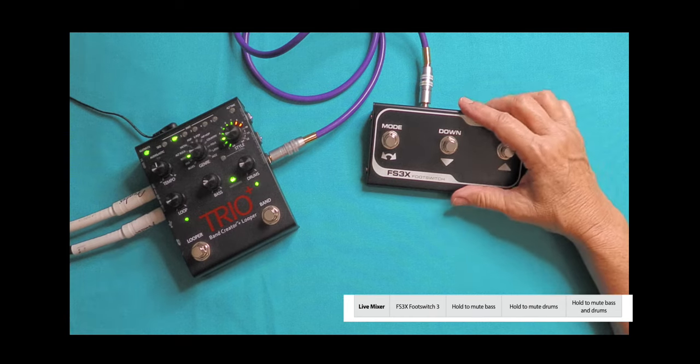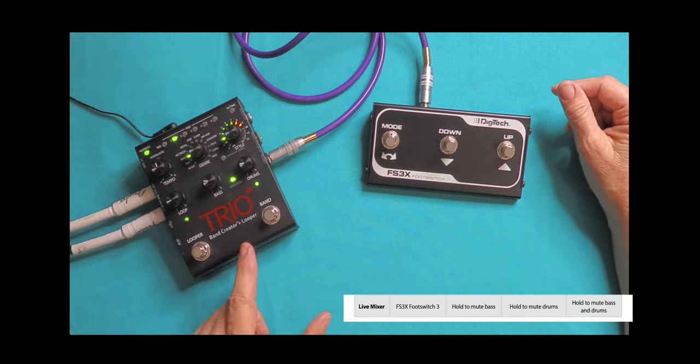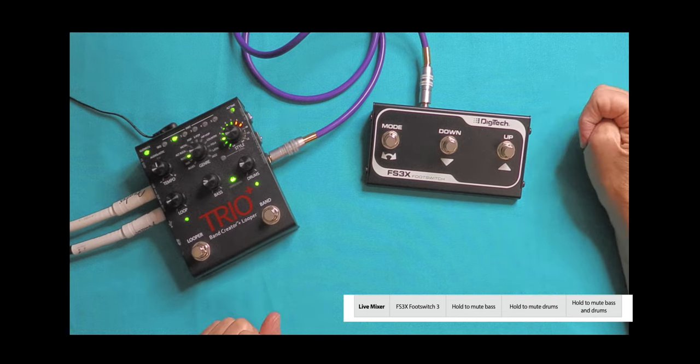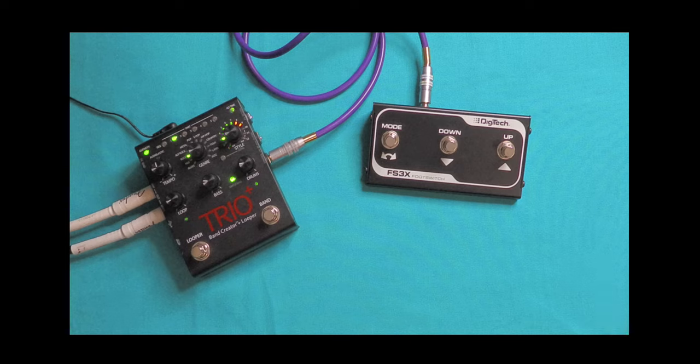So that's how you would configure your foot switch to use the three different modes with your Digitech Trio Plus. Next week, I'm going to show you how to record from your Trio onto your Zoom Live Track L8 or any other recorder that you might have.